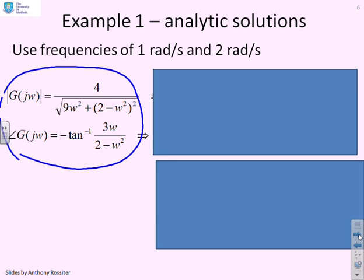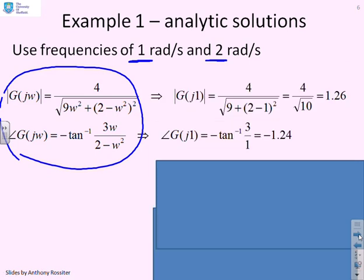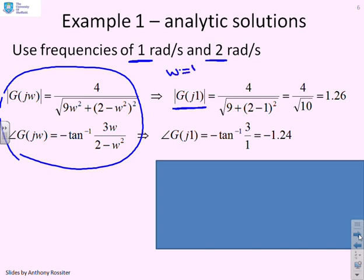Now that we have the formulas, let's substitute in frequencies of 1 radian per second and 2 radians per second. First, 1 radian per second. The modulus of G(j1): substituting ω = 1 gives 4/√(9 + (2-1)²) = 4/√10 = 1.26. For the argument: -tan⁻¹(3/1) = -1.24.